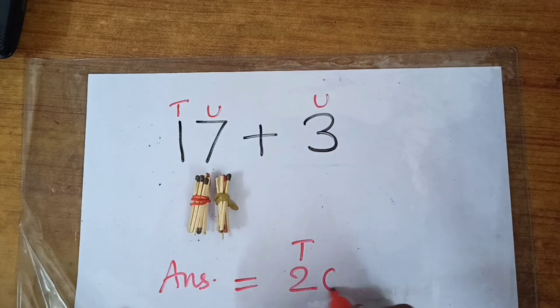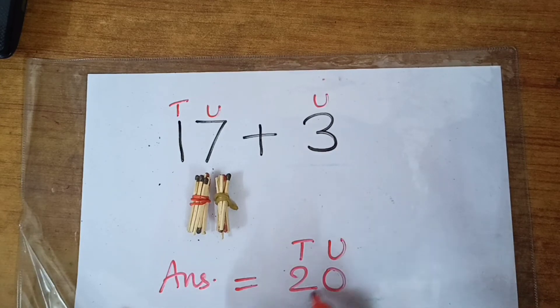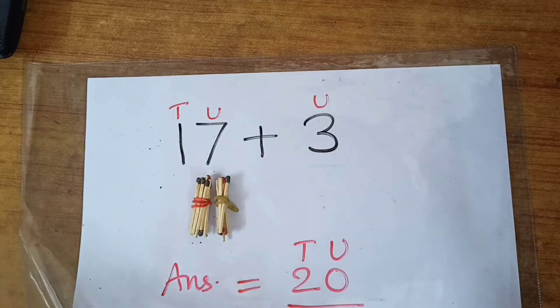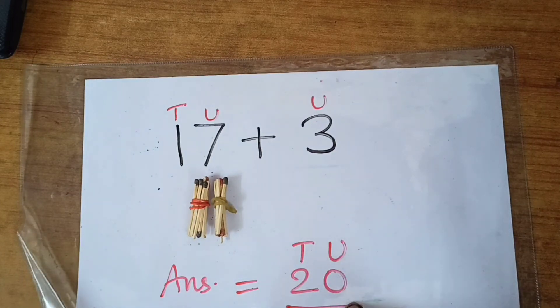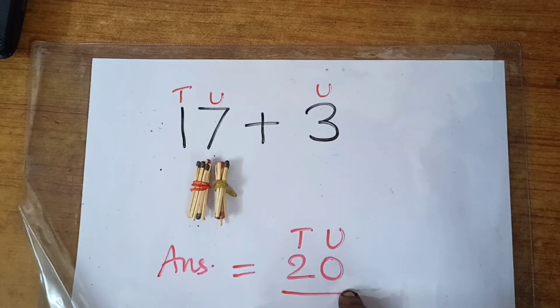2 tens means 20. Units — there is nothing. Units will go 0. So the answer is 20.